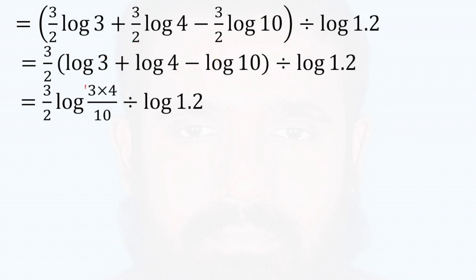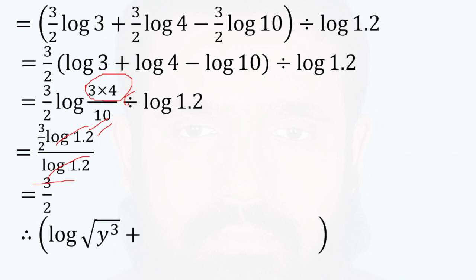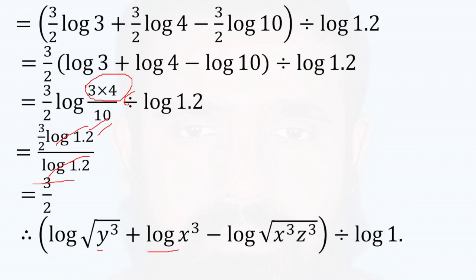So we can use 3 or 4, we should add 1.2. 3 by 2, lock 1.2. So we can add 1.2, lock 1.2, lock 1.2, 1.2, lock 1.2, 1.2. 3 by 2. At the end, 1.2 is equal to 3 by 2.